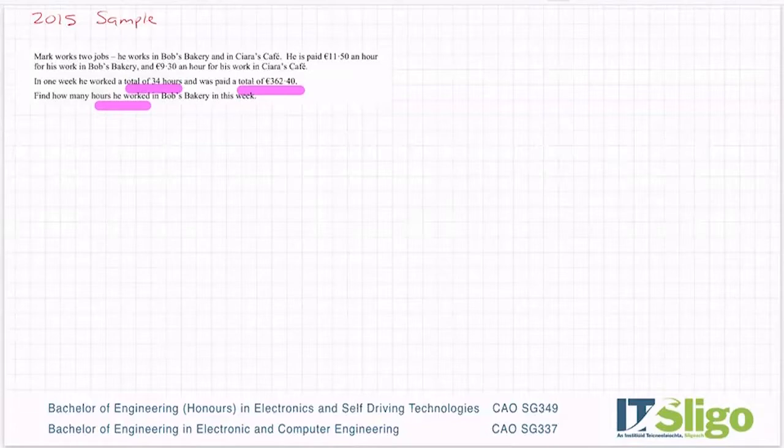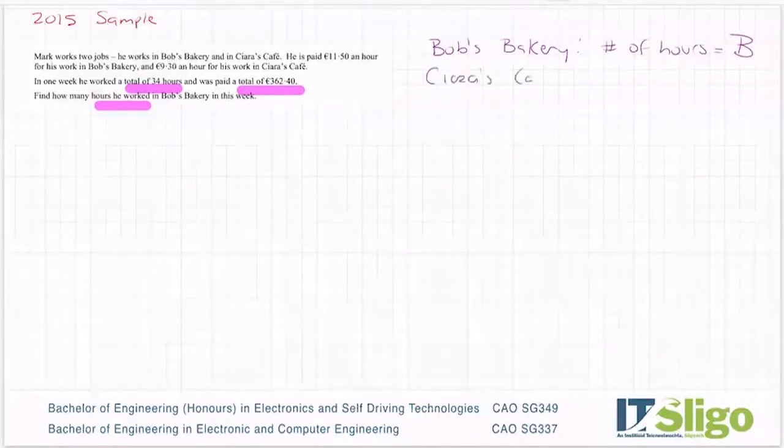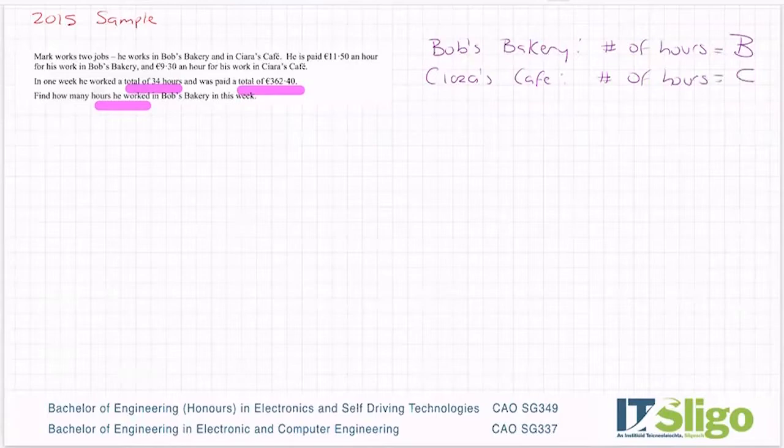So in Bob's Bakery, let the number of hours equal B. You could also go X. And in Ciara's Cafe, let the number of hours equal C. So of course, they could be X and Y. They can be anything you want.